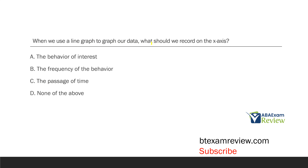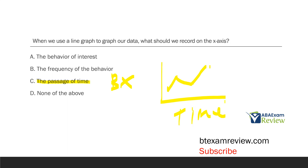When we use a line graph to graph our data, what should we record on the x-axis? This is a pretty straightforward graphing question. Remember, line graphs are the most common form of graphing in ABA — what you'll use almost all the time. The y-axis includes the behavior of interest, so the x-axis would not be behavior. The x-axis is time — sessions, weeks, days, that sort of thing. What we record on the x-axis is the passage of time. Graphing questions should not be difficult. If you understand a line graph, you understand graphing in ABA as an RBT.